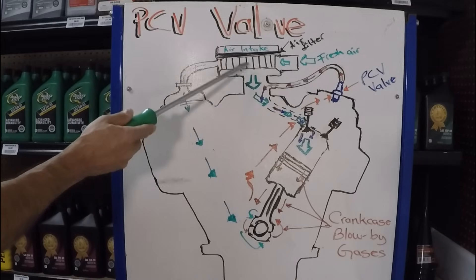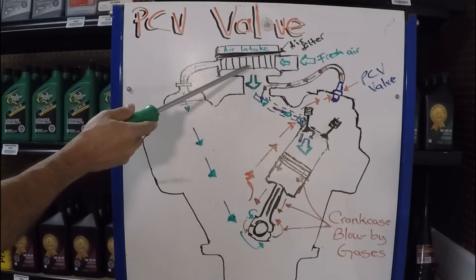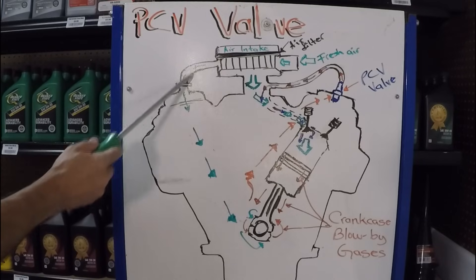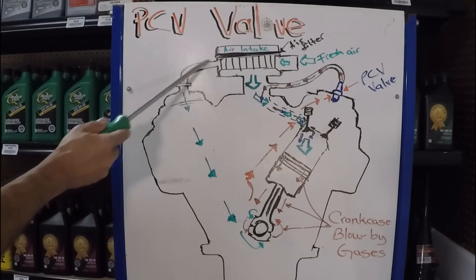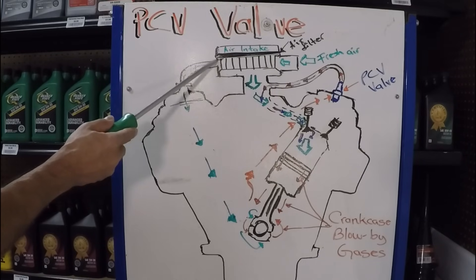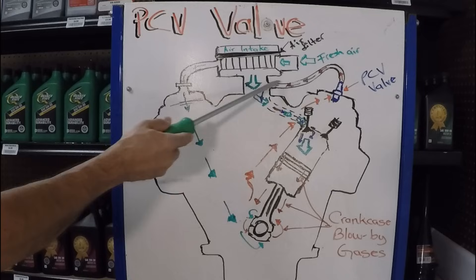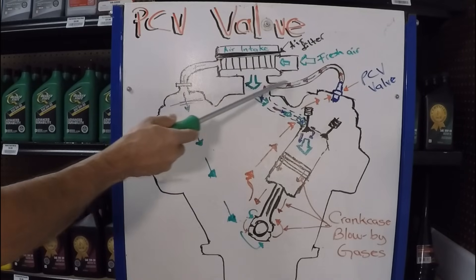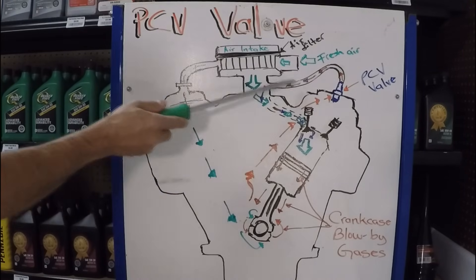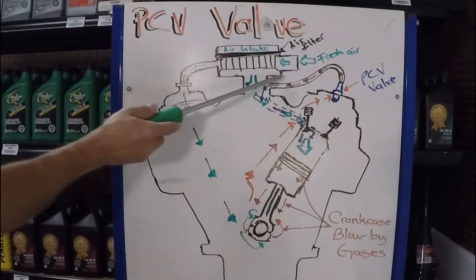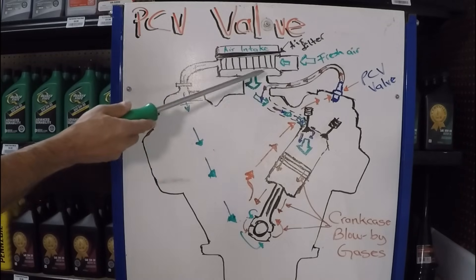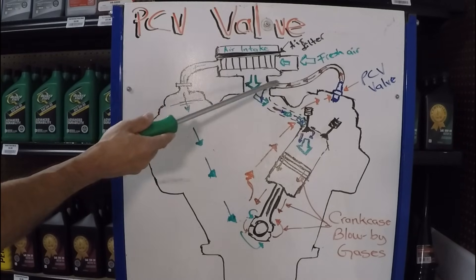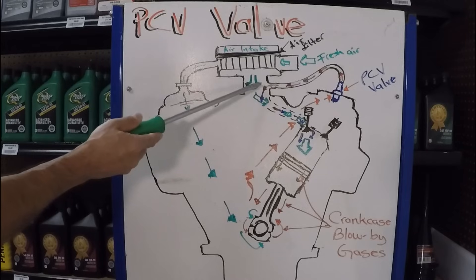It was super easy to distinguish the PCV system because you had one vent hose going to the air filter housing, and then you had a PCV valve hose on the other valve cover that was attached to the engine vacuum. Very easy to distinguish in the past. Modern vehicles are a little bit harder because there's a lot of stuff going on, but they still work the same way.